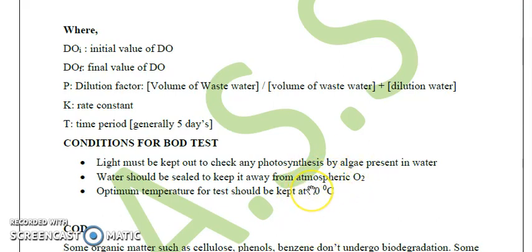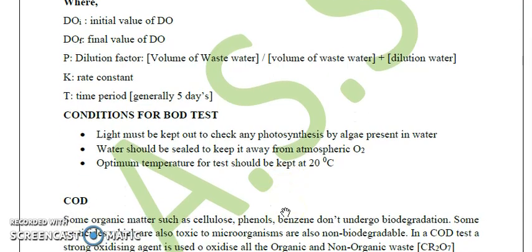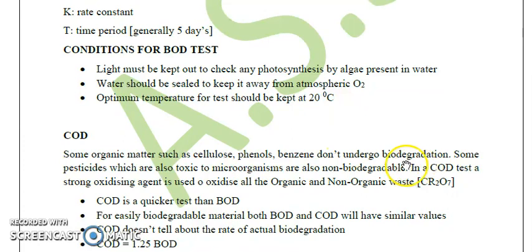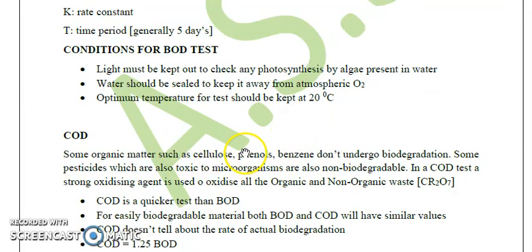Now we will discuss COD, or chemical oxygen demand. Some organic matter such as cellulose, lignin, chitin, phenol, and benzene does not undergo biodegradation. These are also referred to as recalcitrant substances.